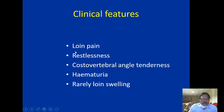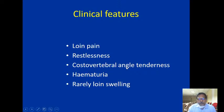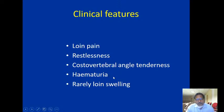On clinical examination, there will be severe tenderness in the costovertebral angle in a patient with ureteric colic. The patient will have haematuria — definitely microscopic haematuria with blood cells on urine testing. Very rarely, if obstruction is prolonged, there can be some hydronephrosis and renal loin swelling.